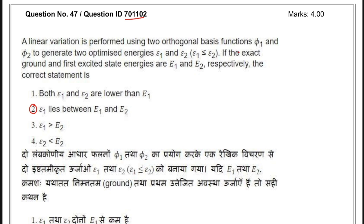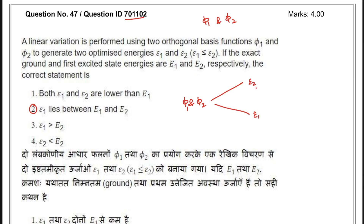It says a linear variation is performed using two orthogonal basis functions. We have φ1 and φ2, and with that we have created two energy levels — ε1 and ε2. And ε1 is smaller than or equal to ε2; let's consider ε1 is strictly smaller than ε2.